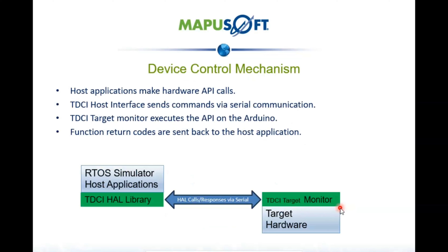TDC-A host-based libraries translate high-level function calls into commands for the target hardware, while the target monitor firmware listens for and executes these commands on devices like Arduino or Cortex. TDC-A currently supports popular development boards like Arduino and Cortex, with plans to support further boards in the future. By simulating real hardware interactions, developers can reduce development time while improving application quality. When host applications make hardware API calls, TDC-A sends commands via serial communication to the target, where they are executed, and the target then sends the function return code back to the host, maintaining seamless two-way communication. This is the device control mechanism of TDC-A.